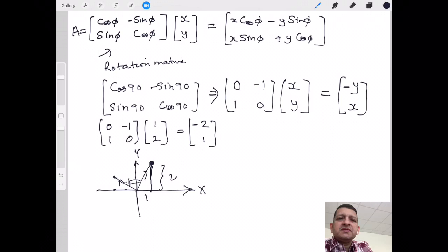So -2, 1 means this vector has moved by 90 degrees. This has rotated by that angle, an angle of 90 degrees, because we took φ as 90.